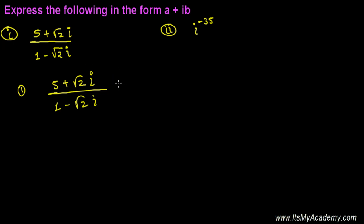So multiply by (1 + √2i) divided by (1 + √2i). Now just do the multiplication of the two complex numbers here. We have a shortcut method, or we can multiply manually.